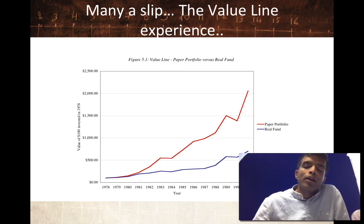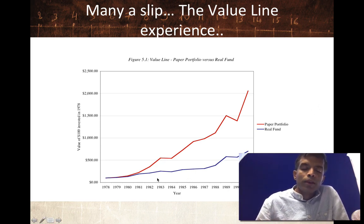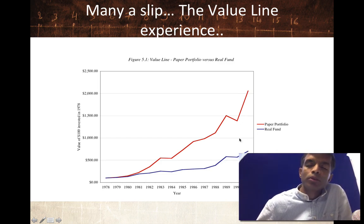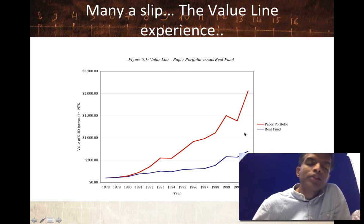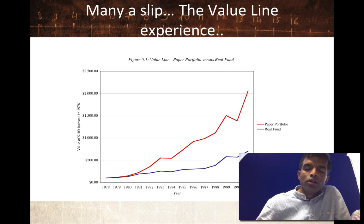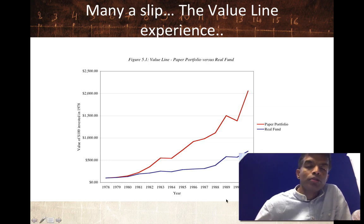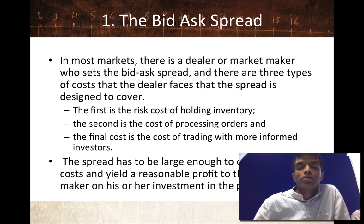Big mistake. Because that ValueLine fund that invested supposedly in the same timeliness 5 stocks — that's their return shown by the blue line. The red line is the paper return, and you can see the actual return that ValueLine delivered was far lower. There are transactions costs. On paper it looks great, but when ValueLine tried to invest based on its own timeliness 5 recommendations, the actual returns didn't match up to those paper returns. That's a cautionary note about the magnitude of transactions costs.